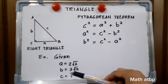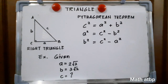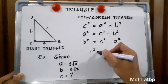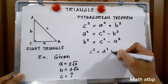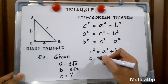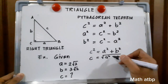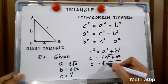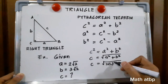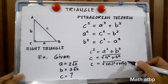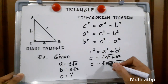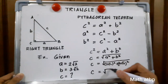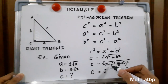Given here, a is equal to 2 square root of 2 and b is equal to 3 square root of 2. Let us now find side c. Using the formula, c squared is equal to a squared plus b squared. Now, let us substitute: c is equal to the square root of (2 square root of 2) squared plus (3 square root of 2) squared. This gives us c equal to the square root of — 2 squared is 4 and square root of 2 times square root of 2 is 2.